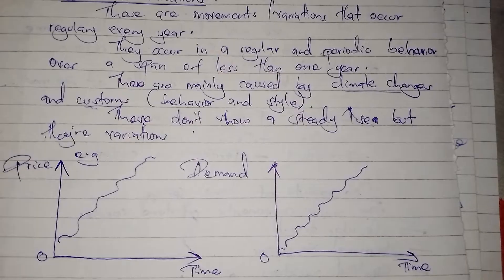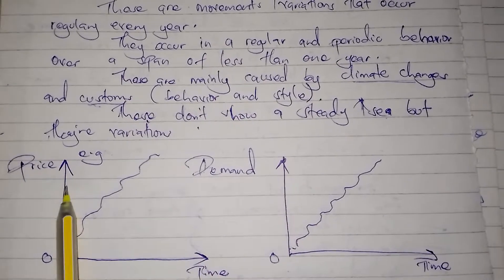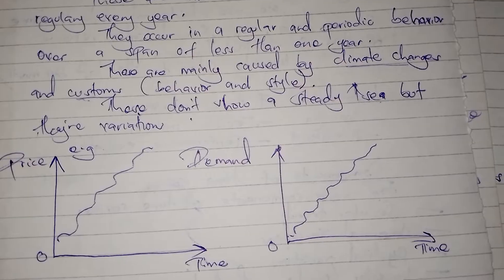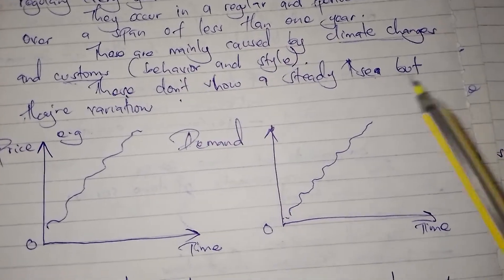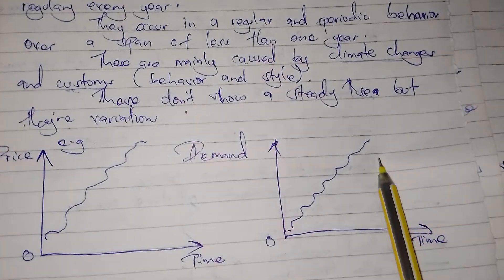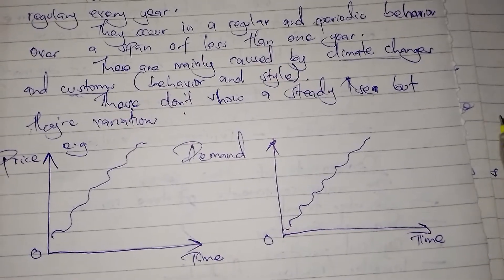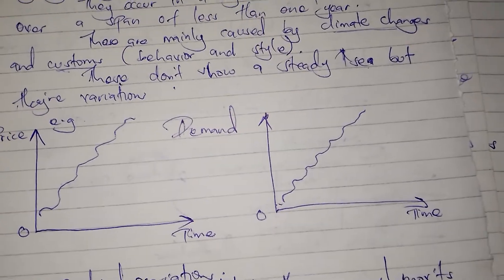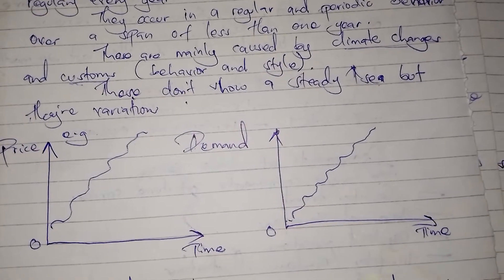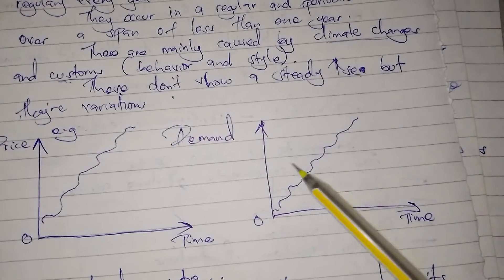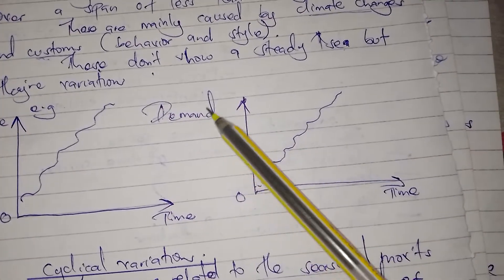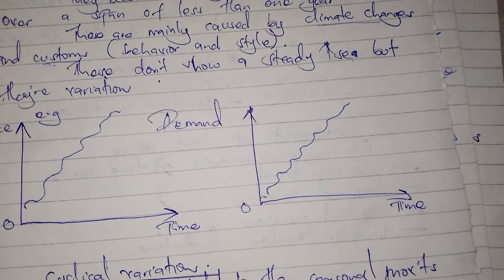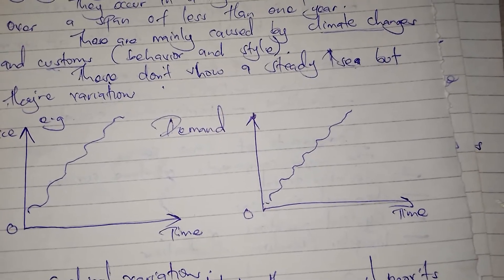An example of seasonal variation is the prices of goods and services. There are periods where prices always increase and periods where they always decrease — for example, during the Christmas season, prices always increase due to high demand. Another example is demand for scholastic materials, which is always high when kids are going back to school, making it a seasonal pattern.